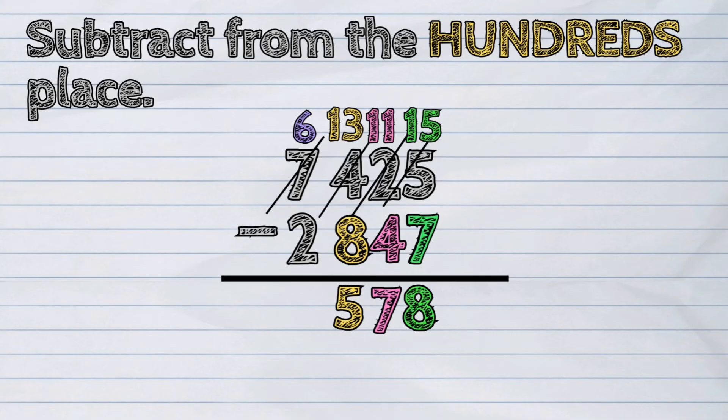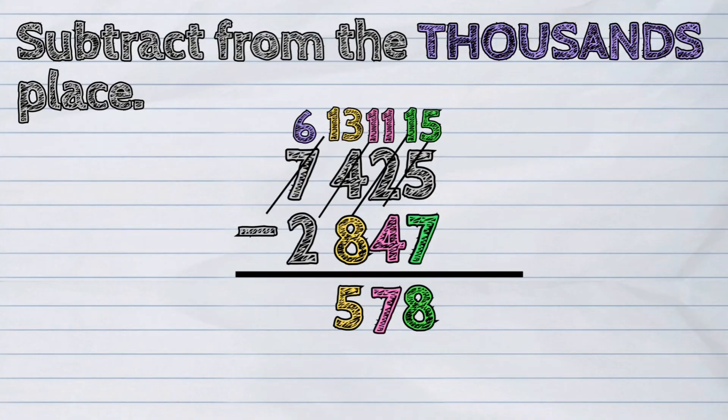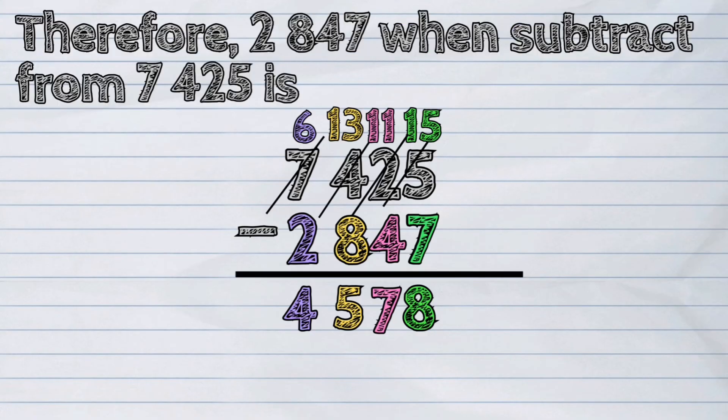The last column is the thousands place. Six thousands minus two thousands. This time, we don't need to regroup the numbers. The difference is four thousands. Therefore, two thousand eight hundred forty-seven when subtracted from seven thousand four hundred twenty-five is four thousand five hundred seventy-eight.